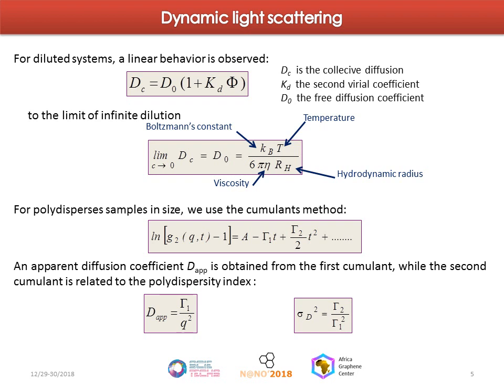For polydisperse samples, the data are analyzed by using the cumulant method, where gamma is the nth cumulant. An apparent diffusion coefficient is obtained from the first cumulant, while the second cumulant is related to the polydispersity index.